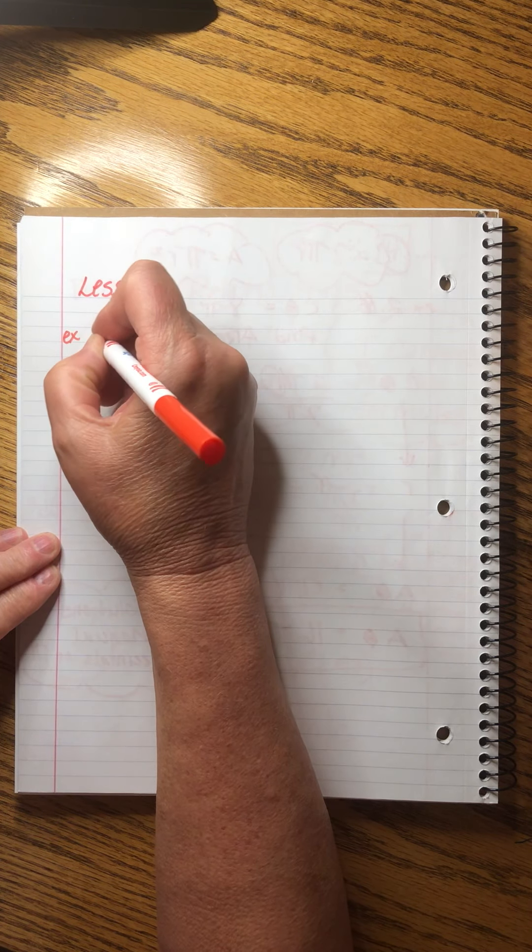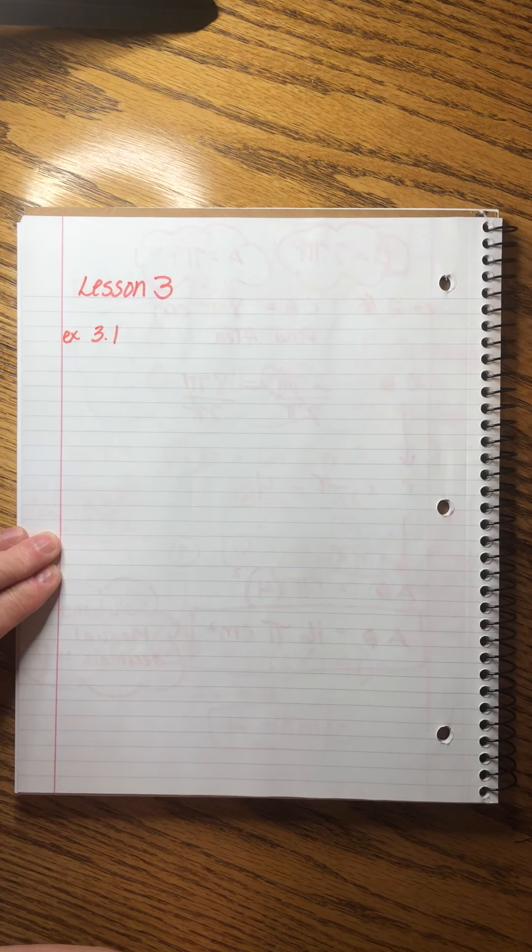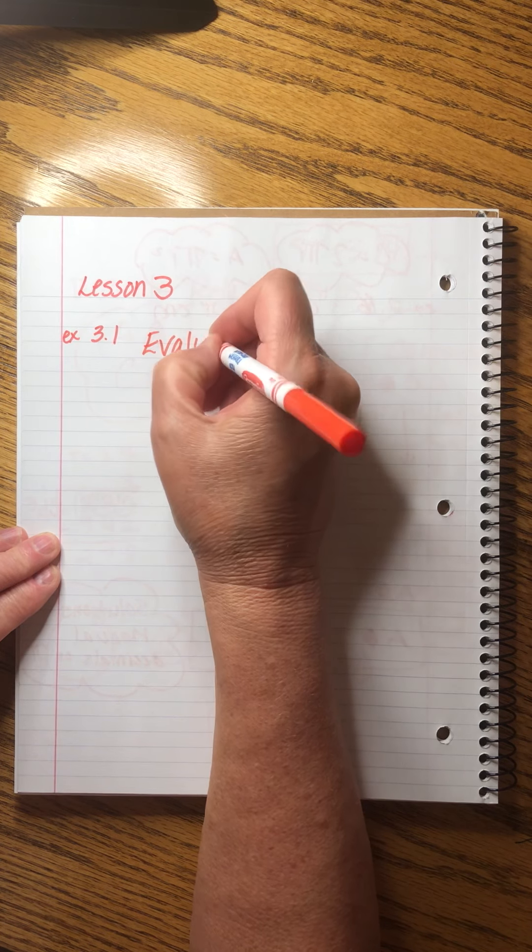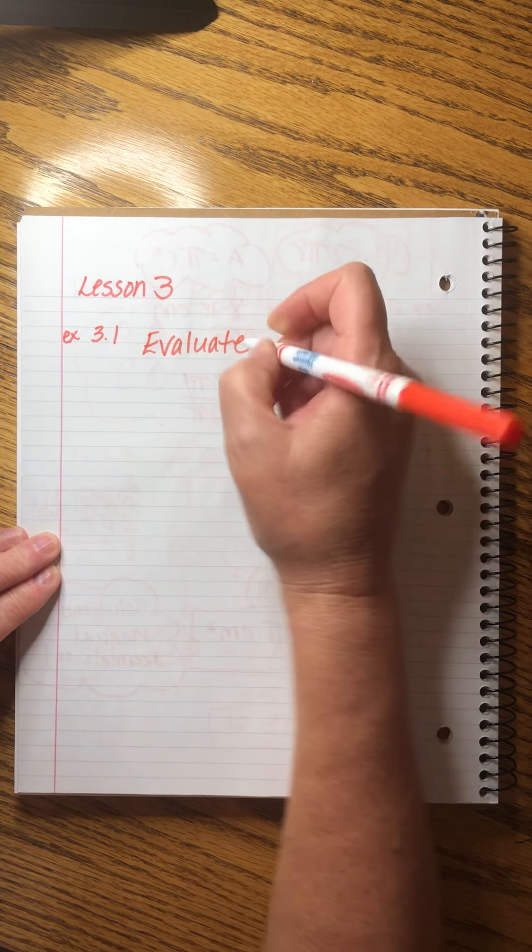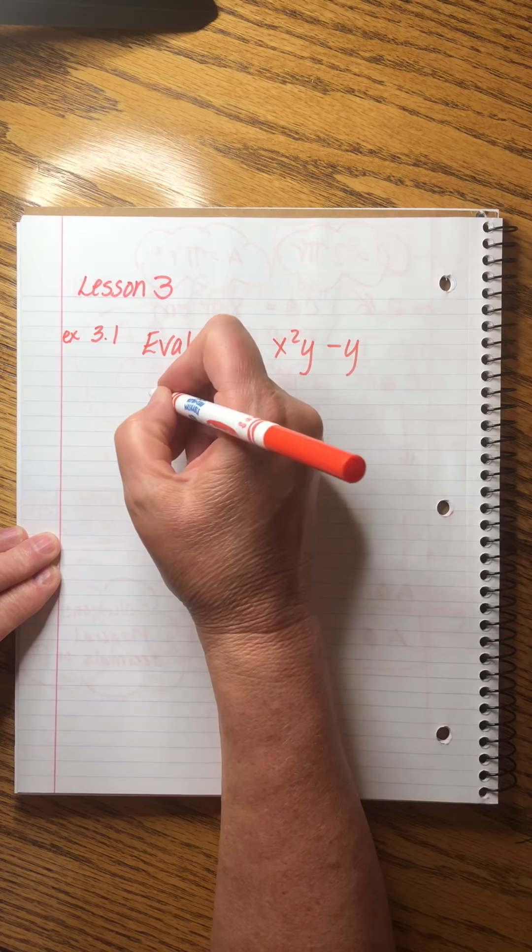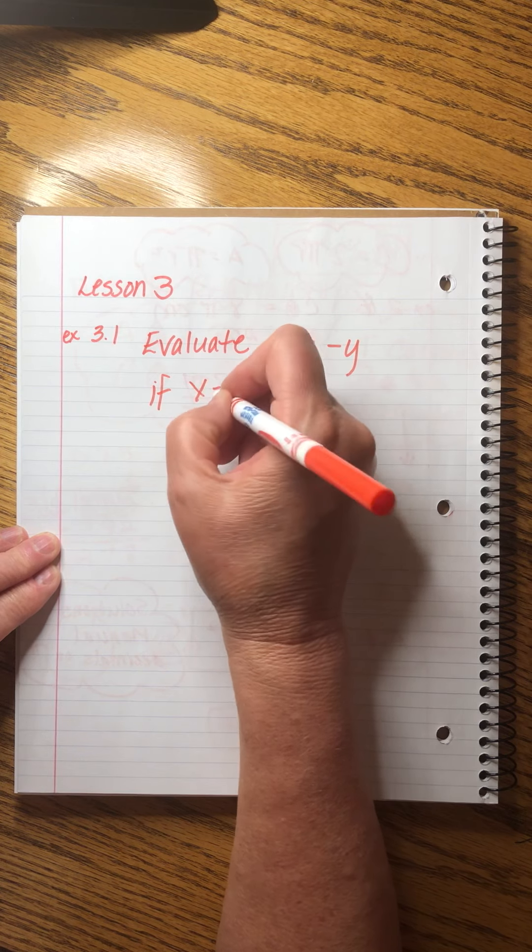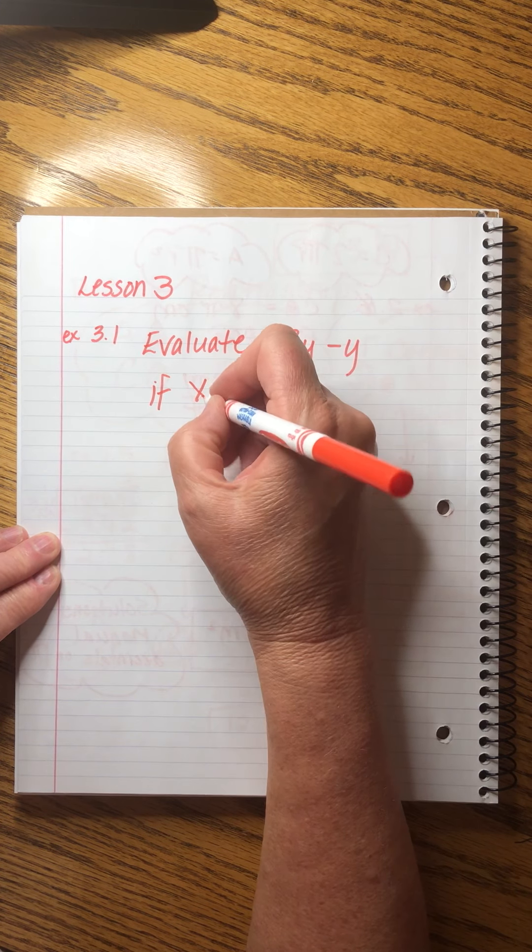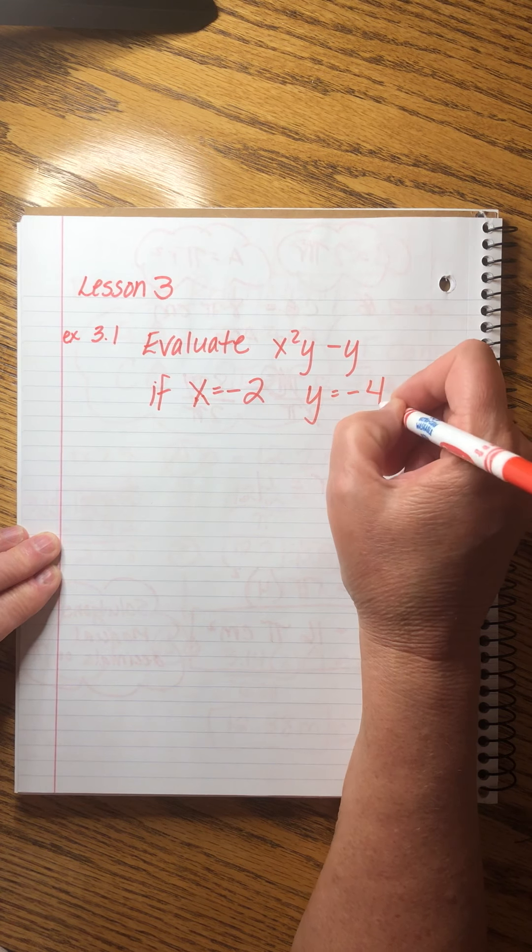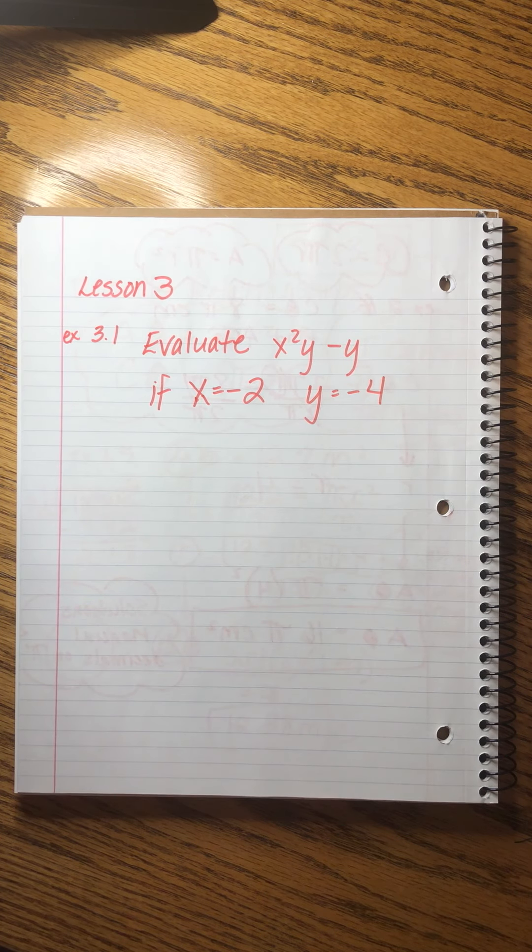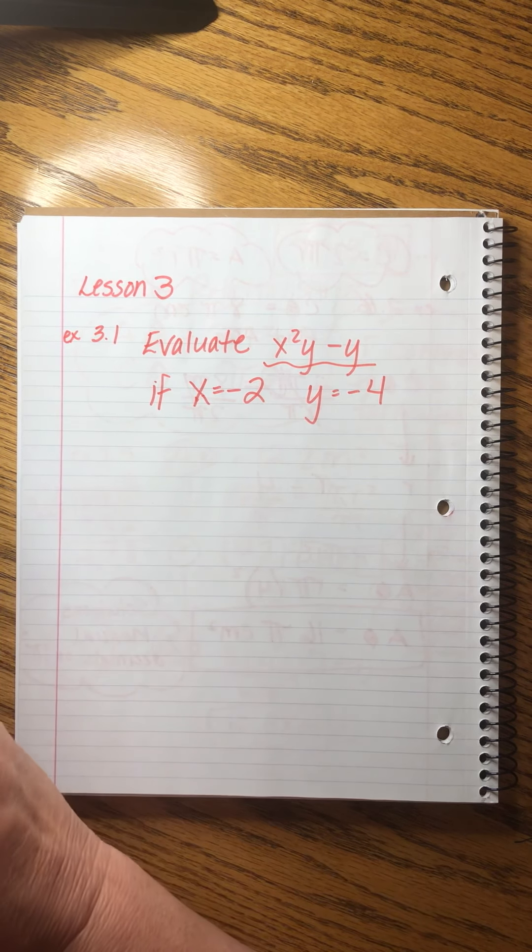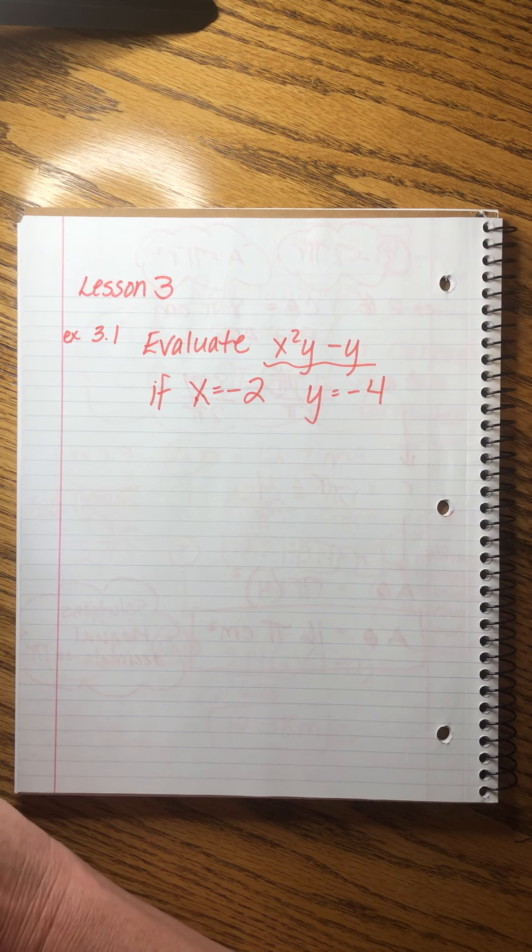This is called evaluating expressions, and here's the way it works. John says evaluate x squared y minus y if x equals negative 2, y equals negative 4. You remember these. Basically, we're given this expression and we have to plug in these values and then simplify, right? Not a big deal.